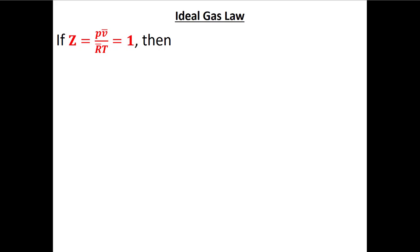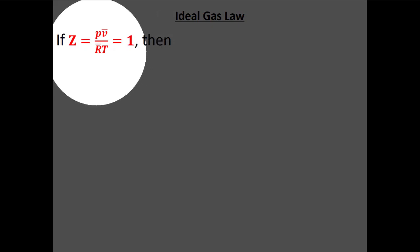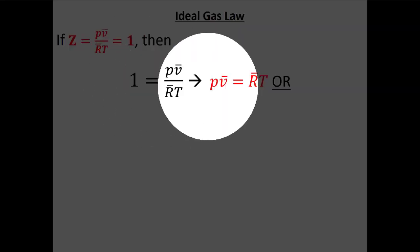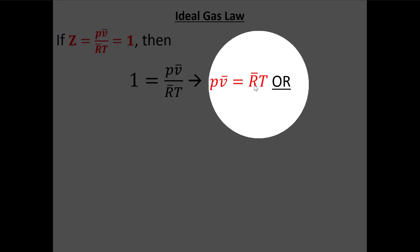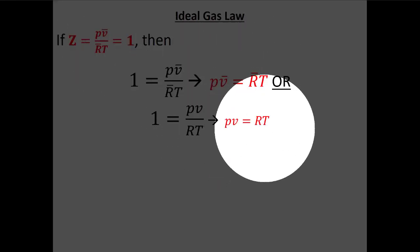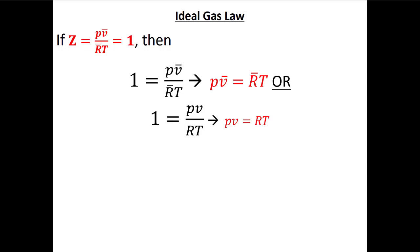If our compressibility factor is one, then P·v̄ divided by R̄·T equals one, which means P·v̄ equals R̄·T. And since Z is the same equation without the bars when we're talking about mass, we get P·v equals R·T. You might know this as the ideal gas law — P·V equals n·R·T — where if you divide big V by the number of moles you get v̄.